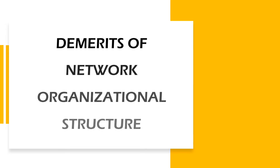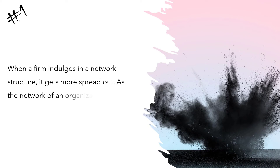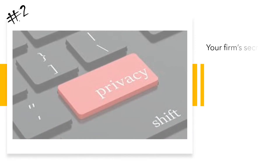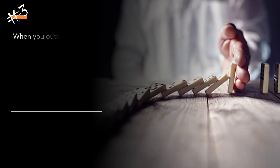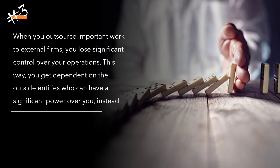Demerits or Disadvantages of Network Organizational Structure: Control and reliability — when a firm indulges in a network structure, it gets more spread out, and as the network grows, it becomes more and more difficult to control. Lack of secrecy — a firm's secret information may get leaked to competitors by the firm working for you. Loss of control — when you outsource important work to external firms, you lose significant control over your operations and become dependent on outside entities who can have significant power over you.